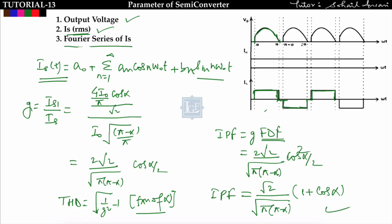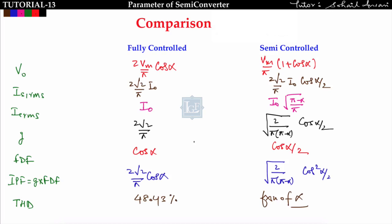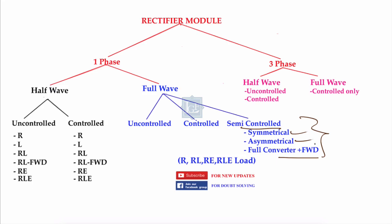In this way we can find any kind of parameter in a semi-converter. Let us compare the fully controlled converter and semi-controlled converter in terms of output voltage, fundamental source current, total source RMS current, distortion factor, fundamental displacement factor, input power factor, and THD. This comparison table summarizes all formulas derived in the last three lectures, completing the semi-controlled converter topic.